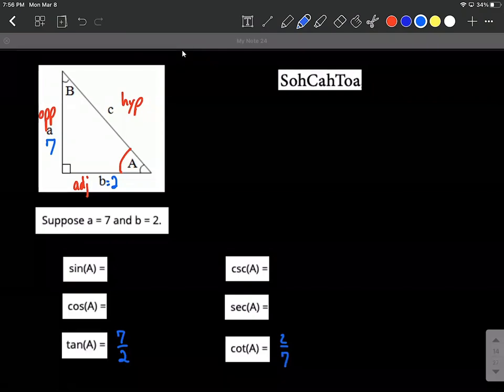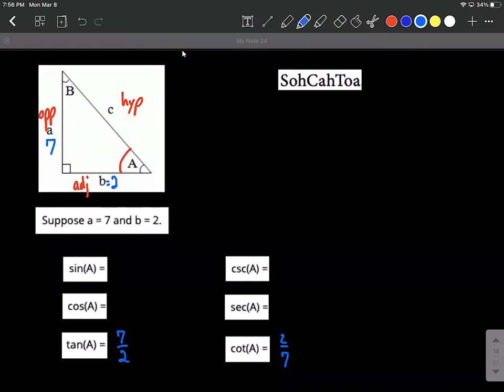However for getting sine opposite over hypotenuse or cosine adjacent over hypotenuse we need the hypotenuse. So to find the hypotenuse what we use is the Pythagorean theorem. As you'll hopefully recall is a squared plus b squared equals c squared. And c is always the hypotenuse in this formula. So let's fill in what we have.